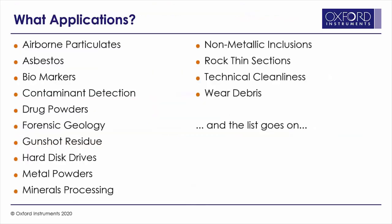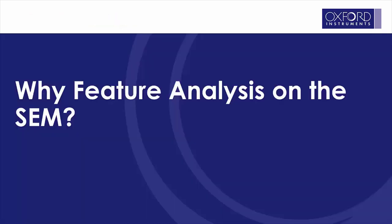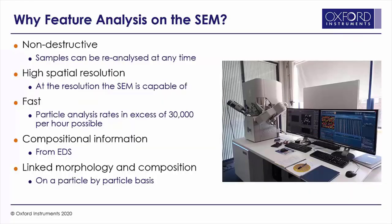That brings to an end our quick survey of different applications that automated feature analysis can be used for. As you can see, what I just showed you is by no means exhaustive, and actually neither is that list — it covers a huge amount of different applications. So one of the questions that comes up is: why should we use feature analysis on the SEM as opposed to some other form of particle counting approach? Analysis on the SEM using energy dispersive X-ray spectroscopy — EDS — brings a number of different advantages.